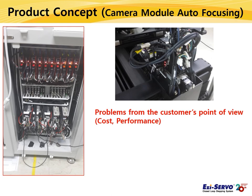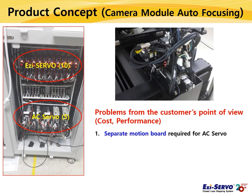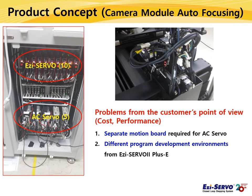Using an actual machine as an example, I would like to introduce the concept of Ethernet product development. This machine aligns the lens and sensor of the camera module used in a smartphone. The customer applied 10-axis of Easy Servo 2 Plus E, a standard type of closed-loop stepping system, and 5-axis of AC servo. A separate motion board is required to control the 5-axis AC servo, and the customer needs to configure two different software development environments. This is cumbersome and increases costs.